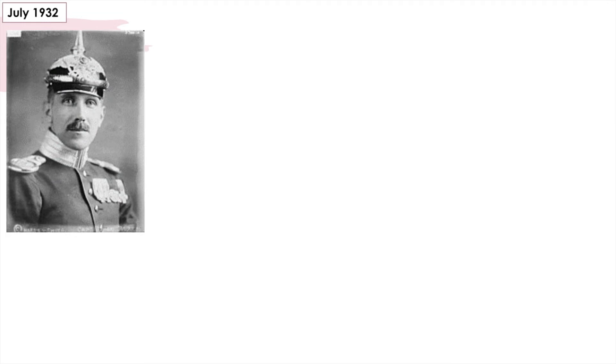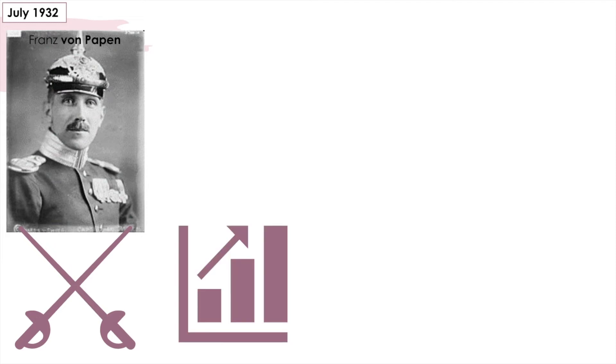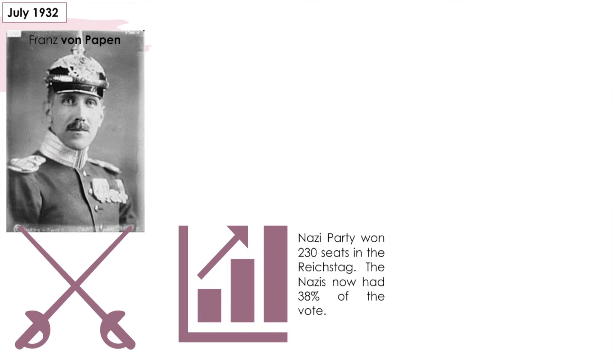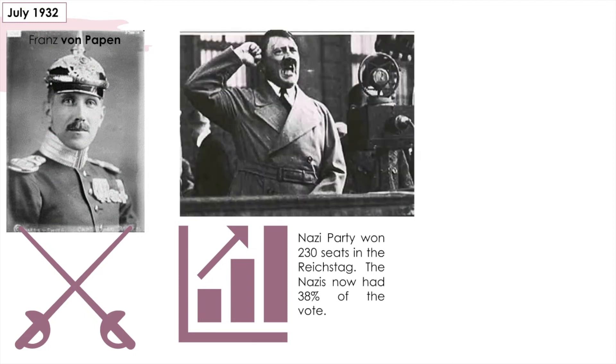Von Papen's new government was in trouble from the start. In July 1932, there were elections for the Reichstag. Campaigning in June and July caused violence in the streets, mainly between the armed private armies of the Nazi Party and the Communist Party. In all, about 100 people were killed and over 7,000 injured; in one clash near Hamburg, 19 people were killed. When the results were announced, the Nazi Party had won 230 seats and was now the largest party in the Reichstag. Hitler demanded that Hindenburg sack von Papen and appoint him as chancellor because he had the biggest majority in the Reichstag.